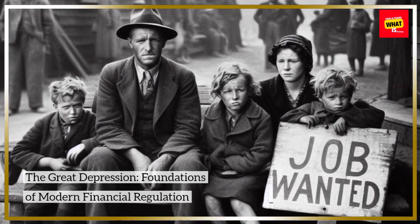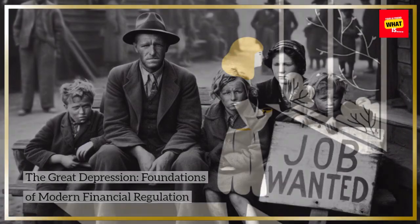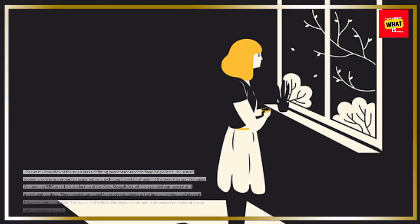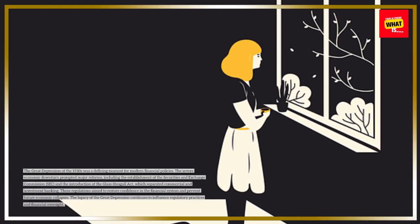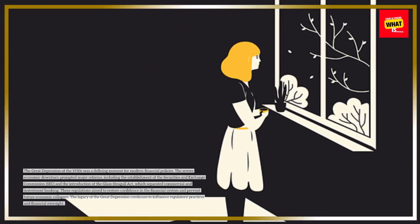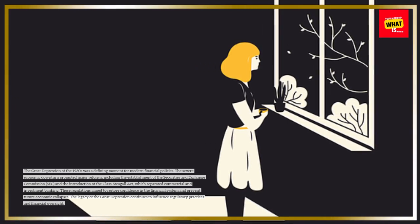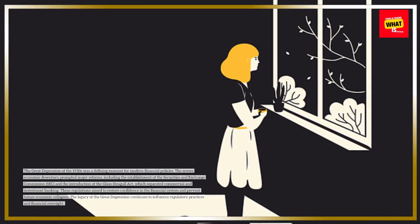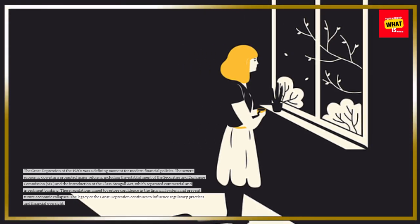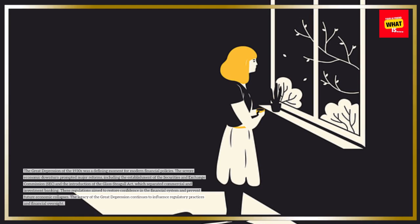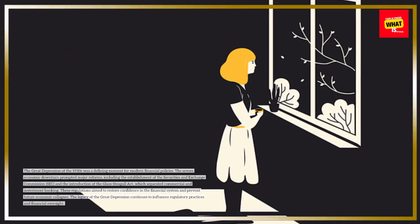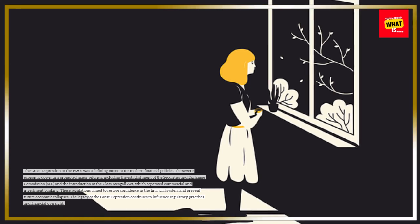The Great Depression of the 1930s was a defining moment for modern financial policies. The severe economic downturn prompted major reforms, including the establishment of the Securities and Exchange Commission (SEC) and the introduction of the Glass-Steagall Act, which separated commercial and investment banking. These regulations aimed to restore confidence in the financial system and prevent future economic collapses. The legacy of the Great Depression continues to influence regulatory practices and financial oversight.